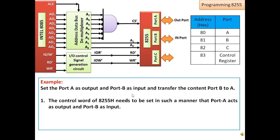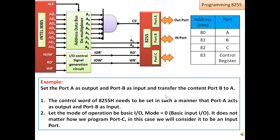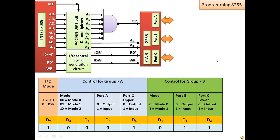In order to do this, the control word of 8255 needs to be set such that Port A acts as output port and Port B acts as input port. Let the mode of operation be basic IO operation, so we will select mode 0. It does not matter how we program Port C. Let us now look at the format of the control word.